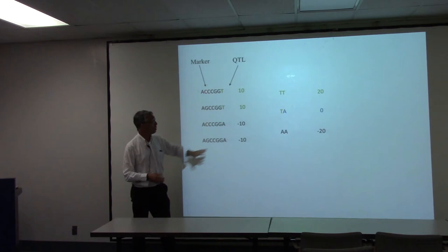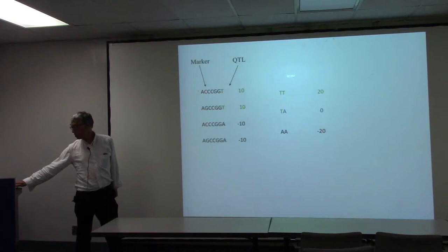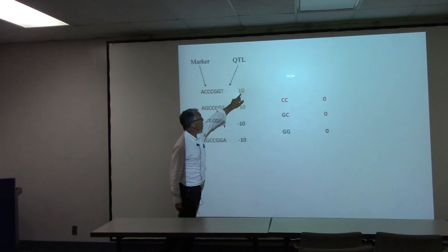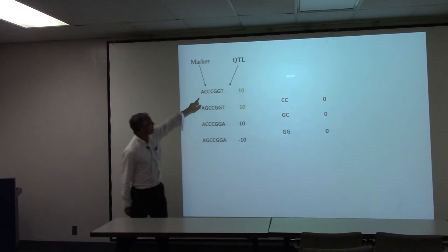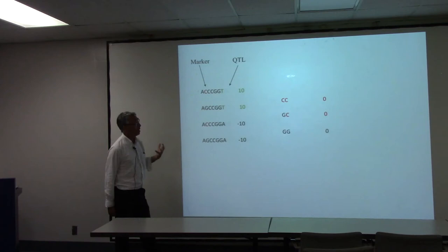But of course we don't have that information — we have a nearby marker. If you apply the same logic to that locus, the C is associated with +10 in one case but −10 in another, so we actually get no association. There's no difference between the three genotypic classes at that locus, even though it's only four base pairs away from the thing we're trying to find. This we regard as a phasing problem.